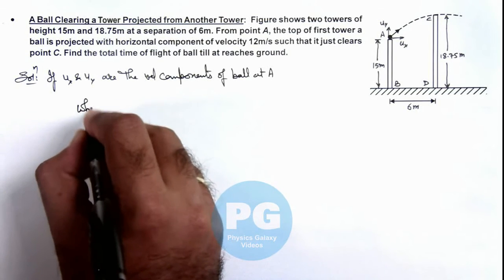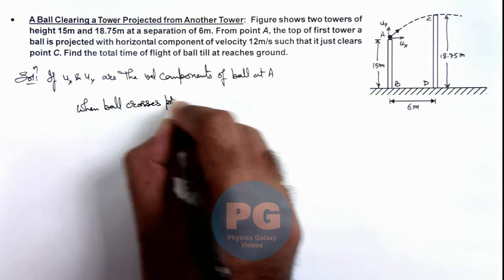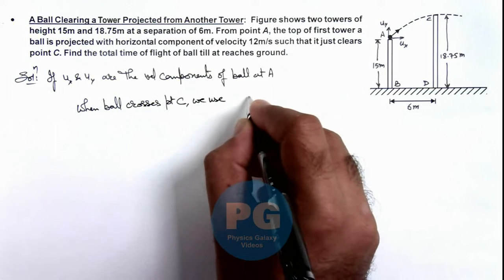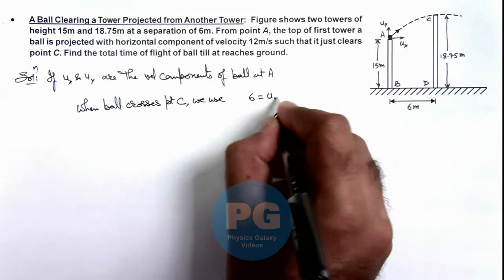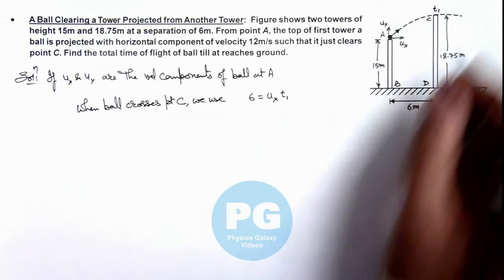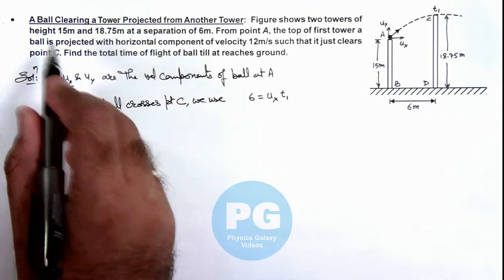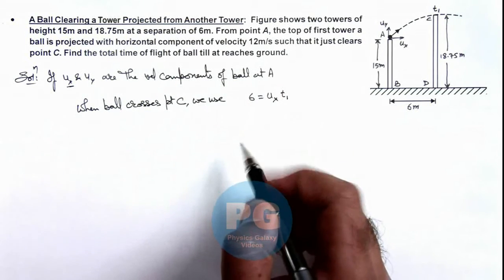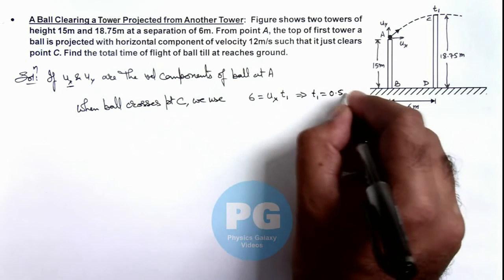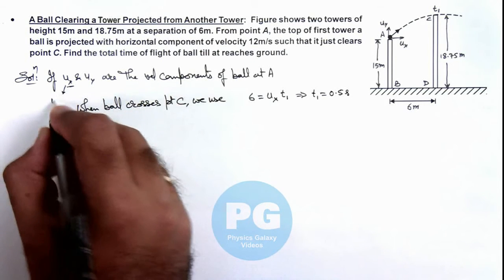So here we can write when ball crosses point C, we can use this distance 6 should be equal to ux multiplied by time t1 if t1 is the time when it is crossing point C. So value of ux is already given to us which is 12 meters per second. So here we can write the value of t1 will be 6 by 12 which is 0.5 seconds.